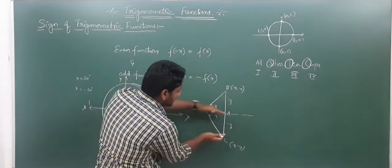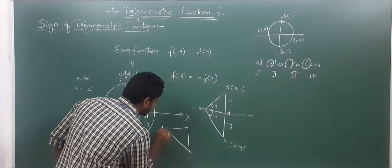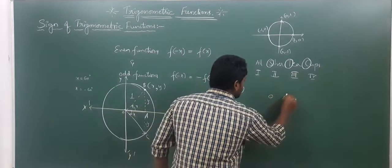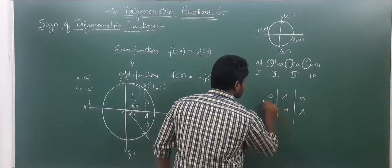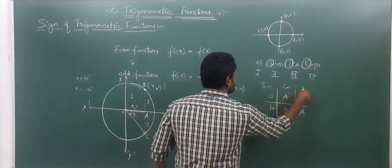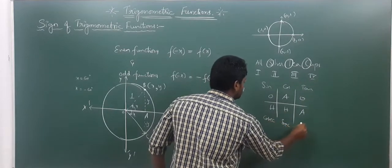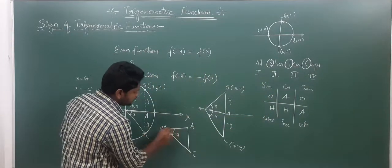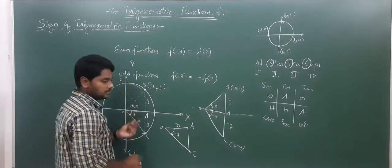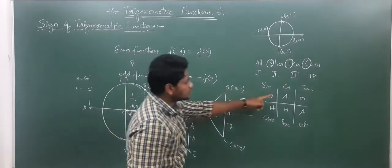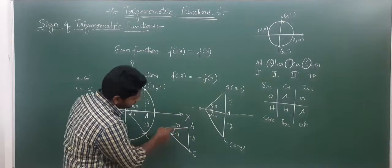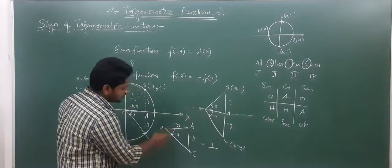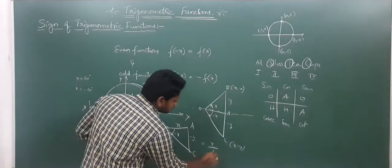For the negative angle triangle OAC, OA is the adjacent side with length x, and AC is the opposite side with length minus y. Now for cos: adjacent by hypotenuse. The adjacent is OA which equals x, and the hypotenuse is OC which equals 1, since it is a unit circle.